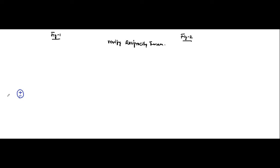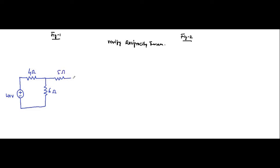In the first circuit we have a 40 volt source, then 4 ohm, 6 ohm, 4 ohm, 5 ohm, and 8 ohm resistors, along with 4 ohm, 8 ohm, 9 ohm, 7 ohm, and 9 ohm resistors.